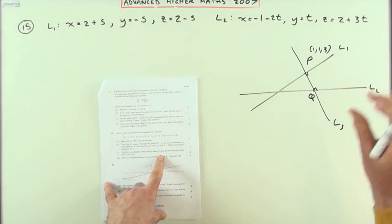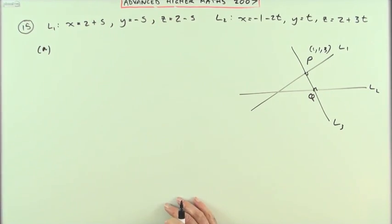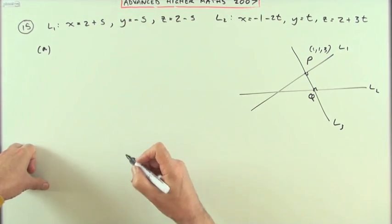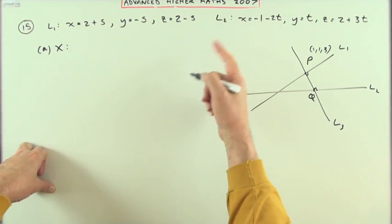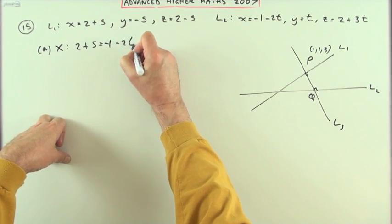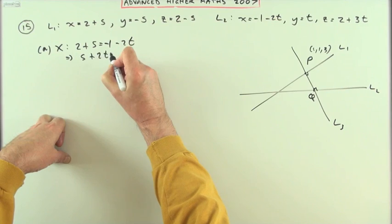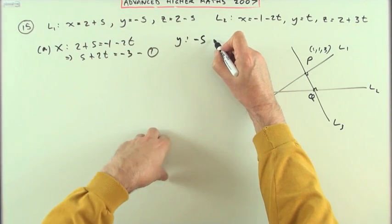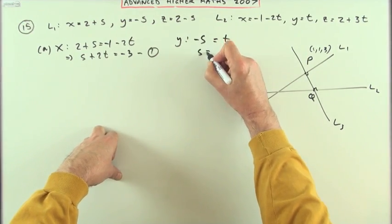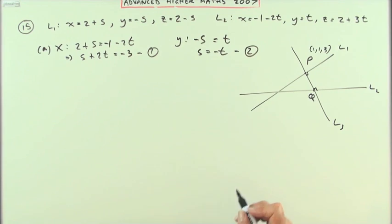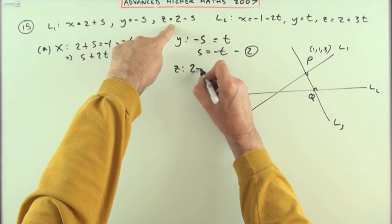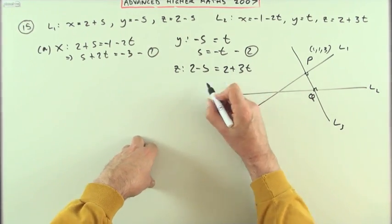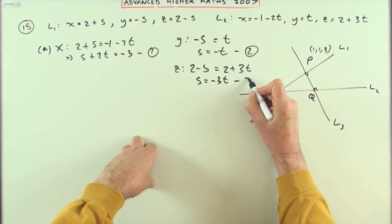Part A: show that the lines don't intersect. If they did intersect, there'd be a unique value of x, y, and z satisfying both equations simultaneously. The x coordinates would have to match: 2 + s = −1 − 2t, giving s + 2t = −3 (equation 1). The y coordinates require −s = t, so s = −t (equation 2). For z: 2 − s = 2 + 3t, which rearranges to s = −3t (equation 3).